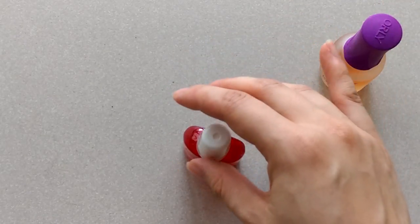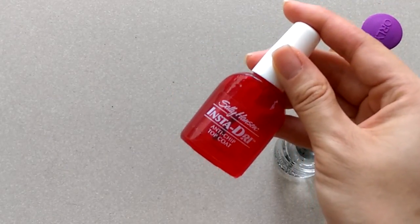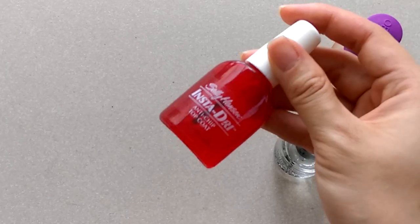You can also use an anti-chip top coat such as Sally Hansen's Insta-Dry at the end over your nail polish.